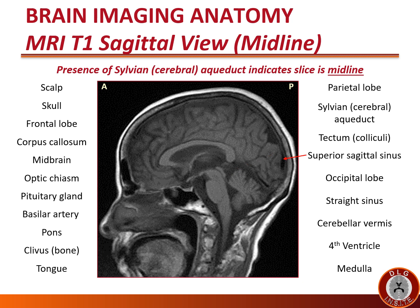The black tube in the midline running just underneath the scalp is the venous structure called the superior sagittal sinus. The posterior inferior aspect of the cerebrum on the midsagittal image is the occipital lobe, lying posterior to the parieto-occipital sulcus. The black tube running just inferior to the occiput and superior to the vermis of the cerebellum, running in the folds of the falx, is the straight sinus — a venous structure that drains the deep cerebral veins.